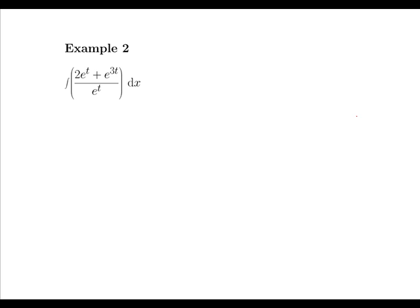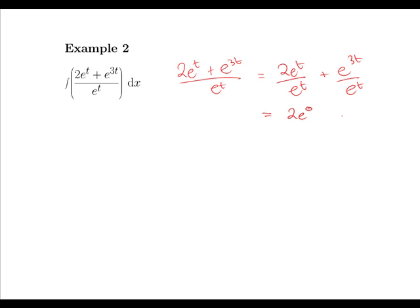In the next example, the function (2e to the t plus e to the 3t) over e to the t is not in its simplest form. So first we need to simplify the function. If we split up the fraction, we get 2e to the t over e to the t plus e to the 3t over e to the t, and then use the rule of indices to get 2e to the 0 plus e to the 2t, or simply 2 plus e to the 2t.